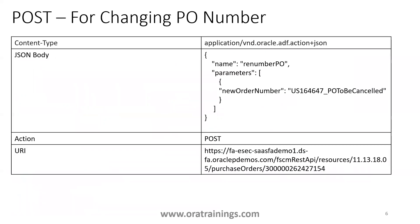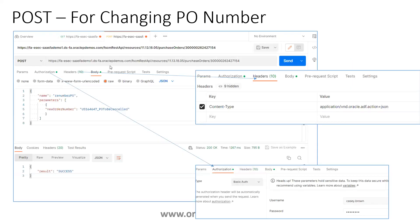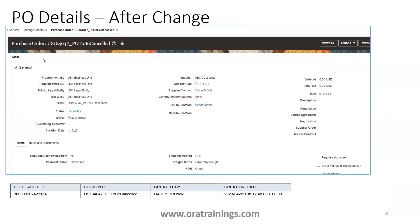The operation we want to perform is a POST operation. It requires the content type 'application/vnd.oracle.adf.action+json'. The JSON body has the name 'renumberPVO' and requires a parameter called 'newOrderNumber', where you provide the new order number you want. From Postman, mention the URI in the URL, provide credentials in the authorization section, set the content type in the header, and in the body mention the renumberPVO parameters with the new order number you want to assign.